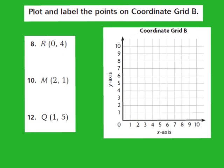Now let's look at this next slide. It says to plot and label the points on coordinate grid B. Right here we have coordinate grid B. Remember, the x-axis runs horizontal and the y-axis runs vertically. You always have to move along the x-axis first because x comes before y in the alphabet — so you move horizontally along the x-axis first, then vertically along the y-axis.